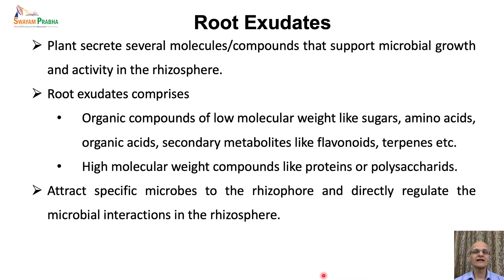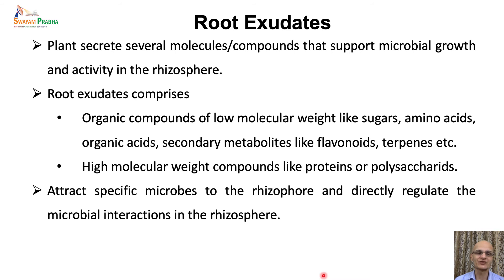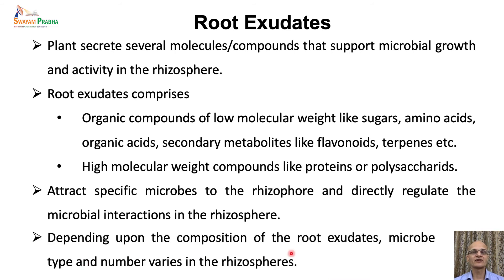Root exudates provide signals for initiating symbiosis either with rhizobacteria or with mycorrhizal fungi. It is the type of signal — in the form of metabolite or chemical — that will regulate the relationship and define what kind of interaction is established between the plant and the microbes. Depending upon the composition of the root exudates — what kind of metabolites or energy molecules are secreted — the type of microorganisms that colonize and their numbers may vary in the rhizosphere.